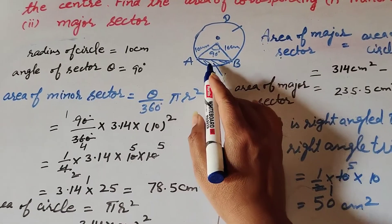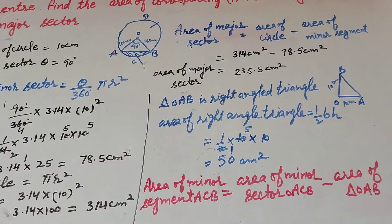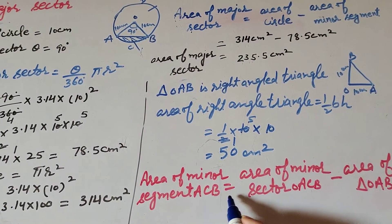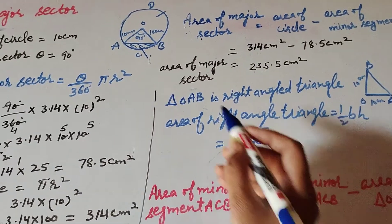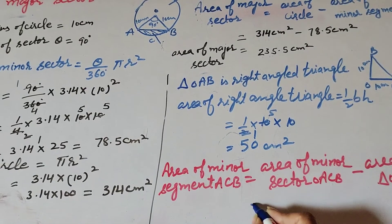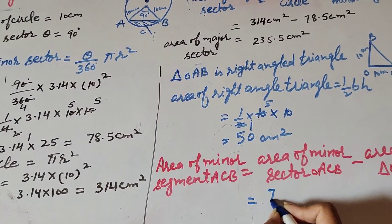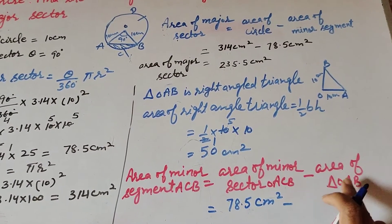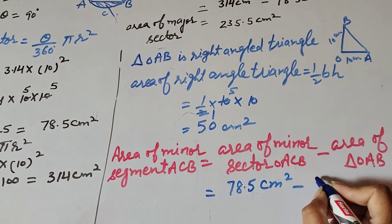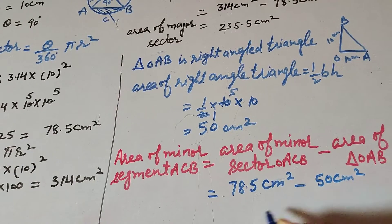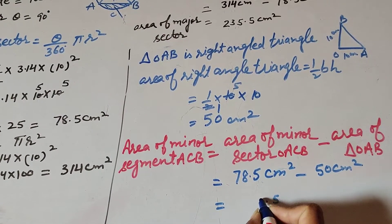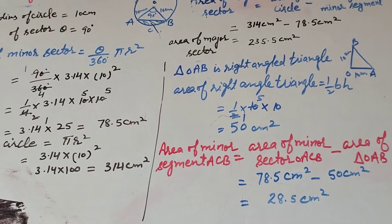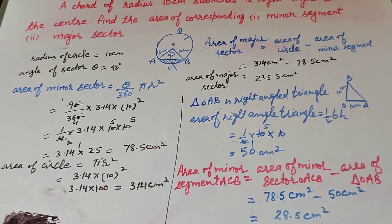Now we find the area of minor segment. Area of minor segment ACB equals area of minor sector OACB minus area of right angle triangle OAB, which equals 78.5 minus 50, equals 28.5 cm squared. So area of minor segment ACB equals 28.5 cm squared.